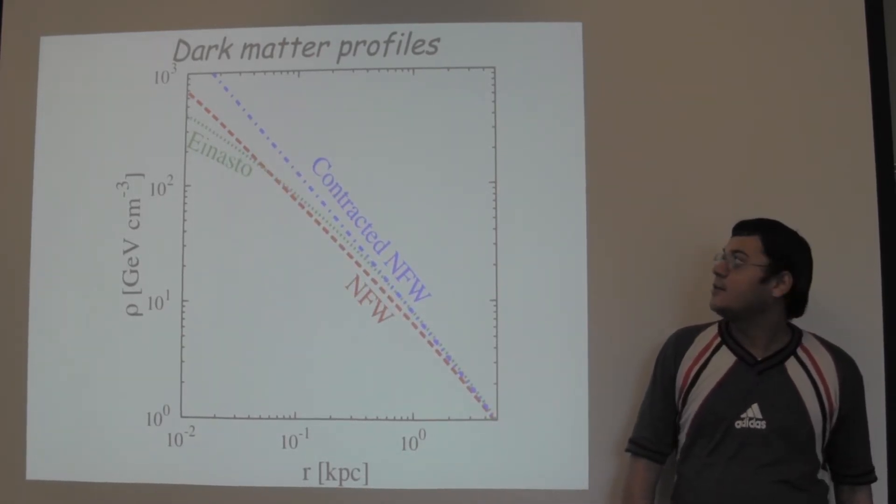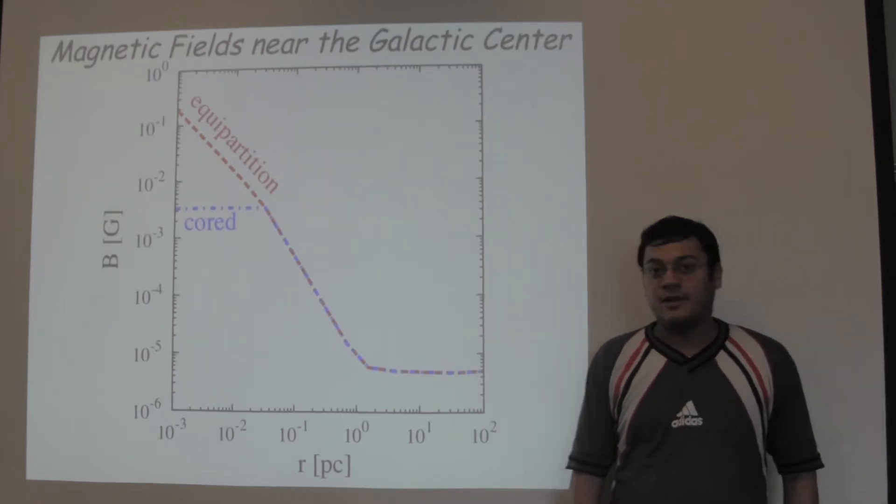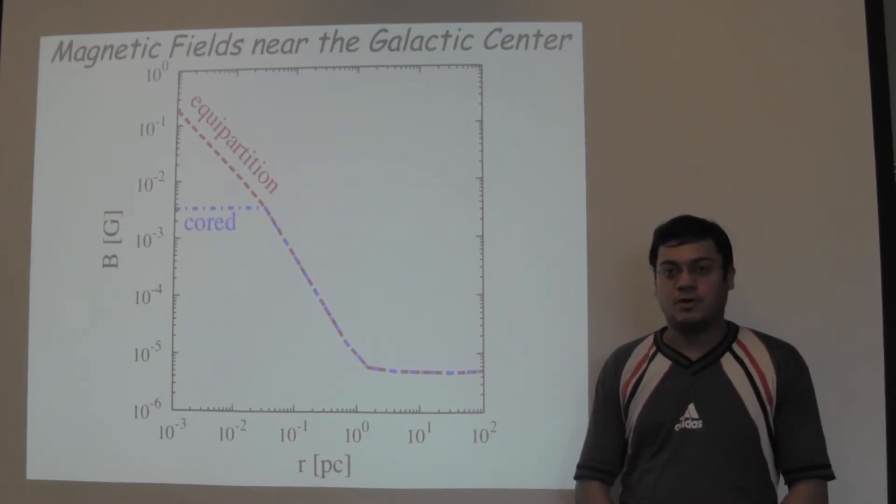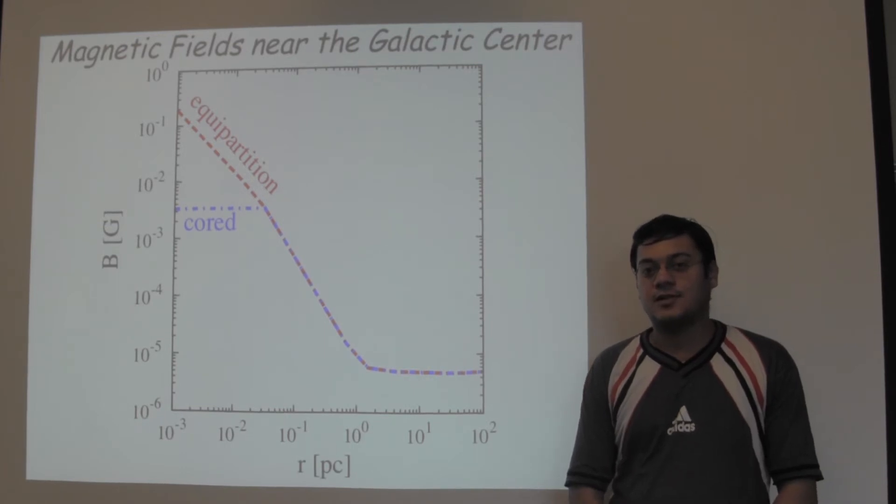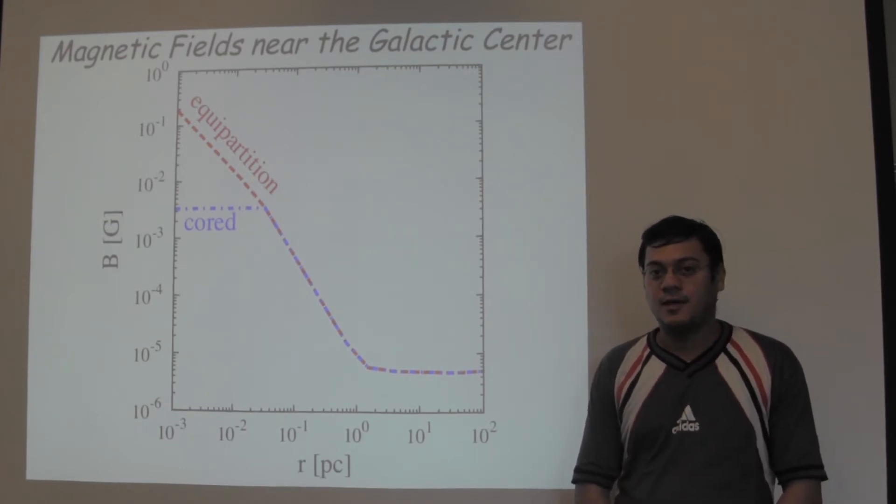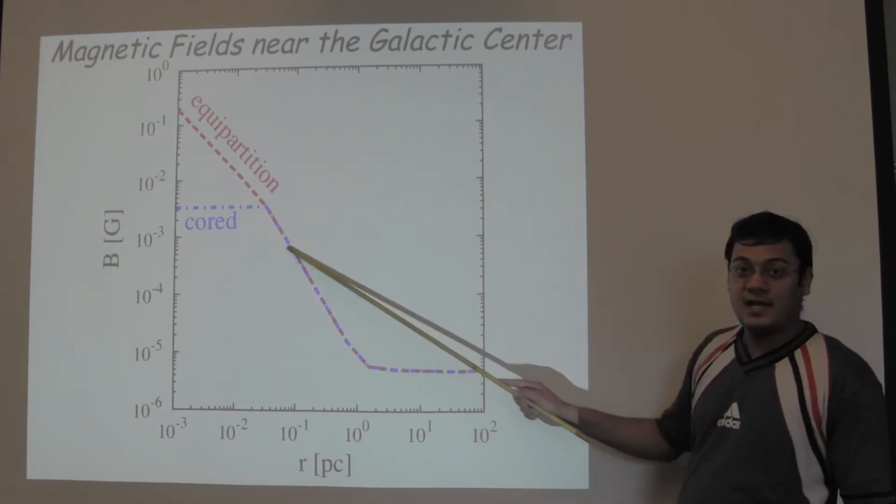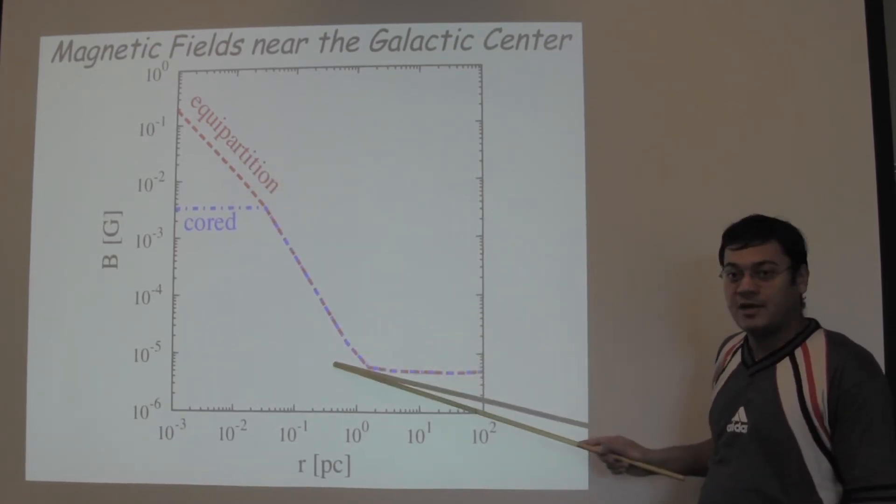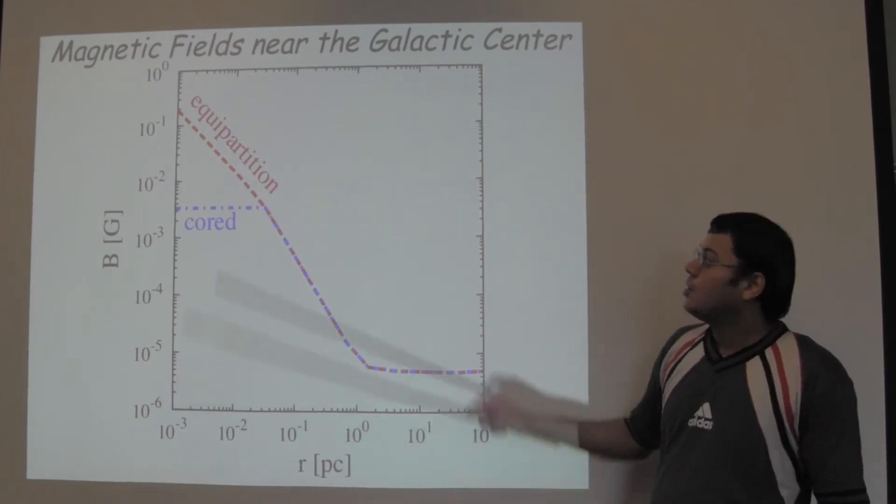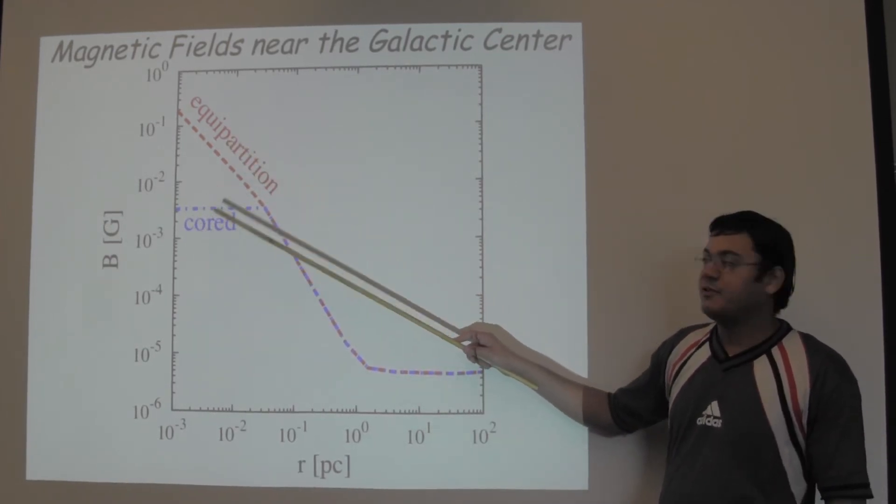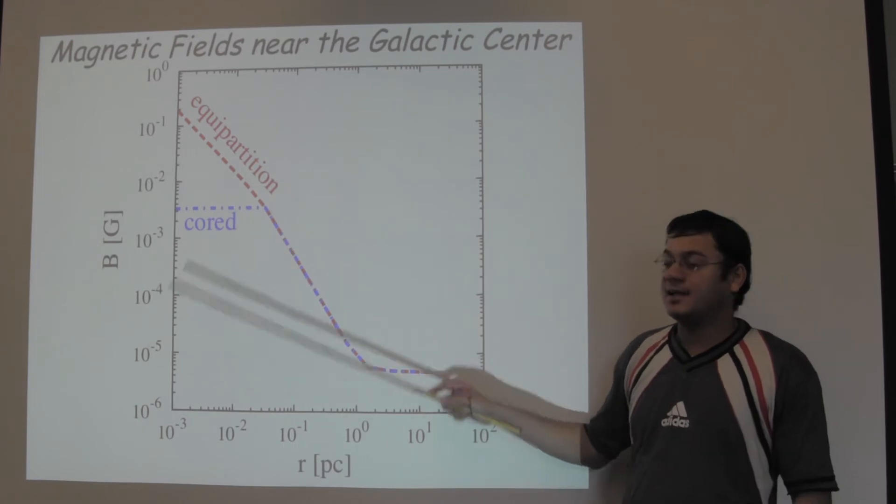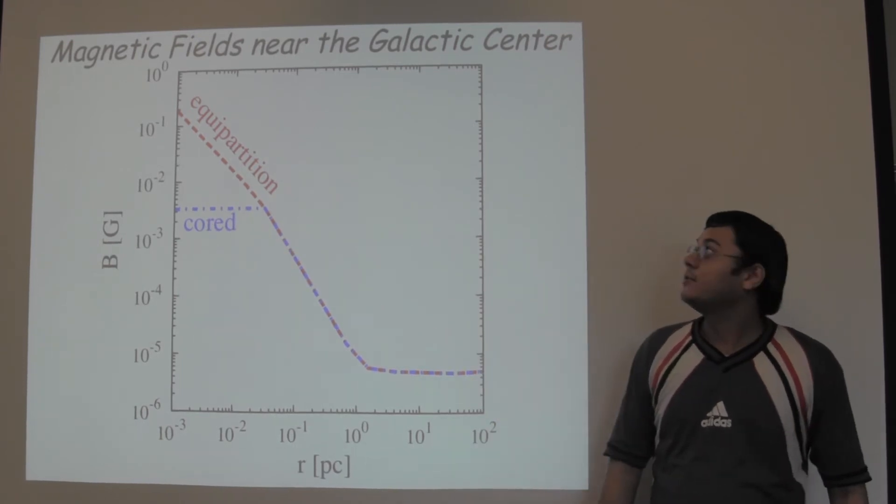In the next slide, we show the magnetic field in one of the regions of interest that we used in our work, which has an angular radius of 4 arc seconds around the galactic center. At such a small region around the galactic center, the magnetic field is highly amplified due to accretion of matter by the supermassive black hole at the galactic center. We show the two extreme forms of the magnetic field that can be present at the galactic center in this region.